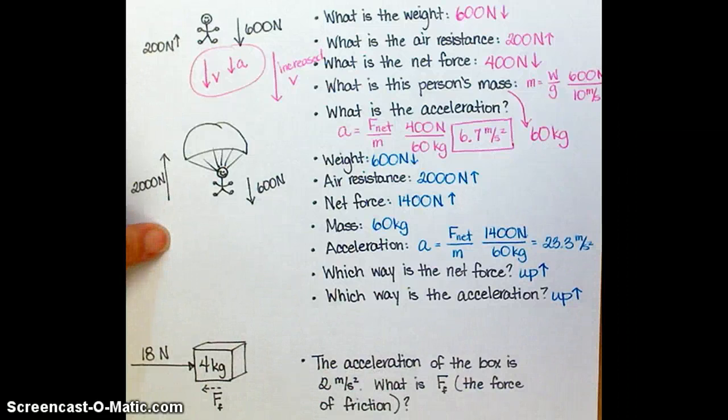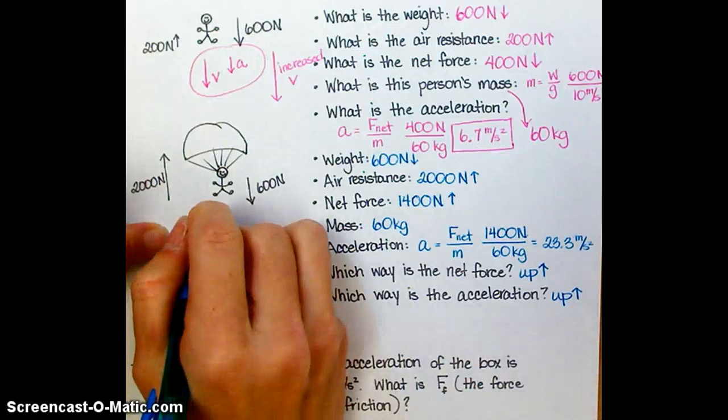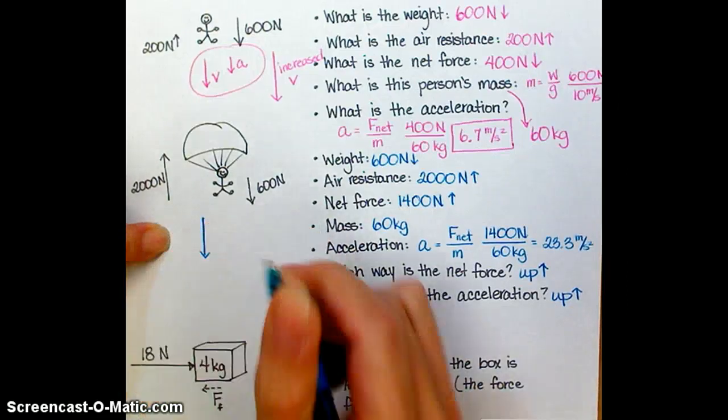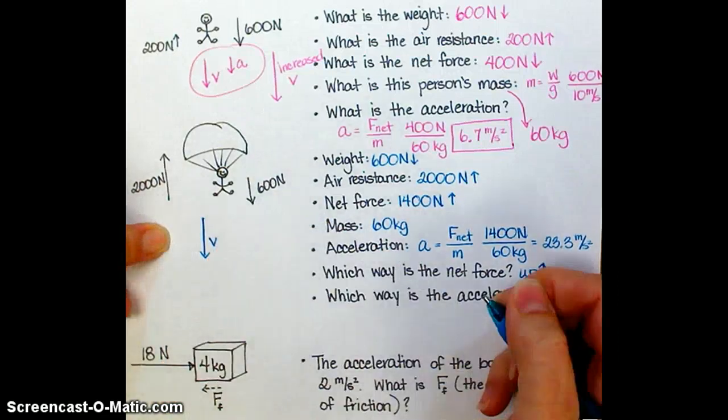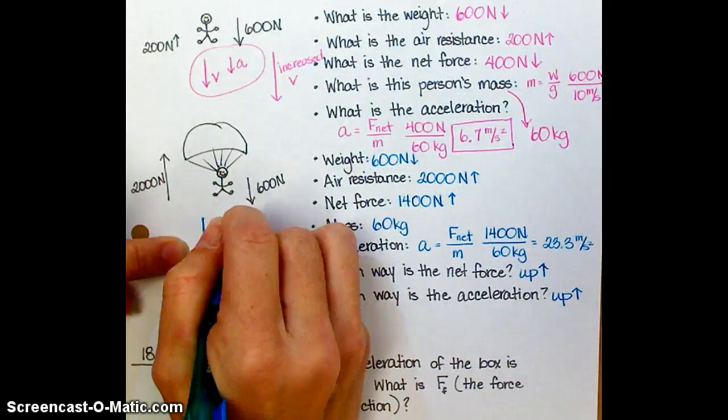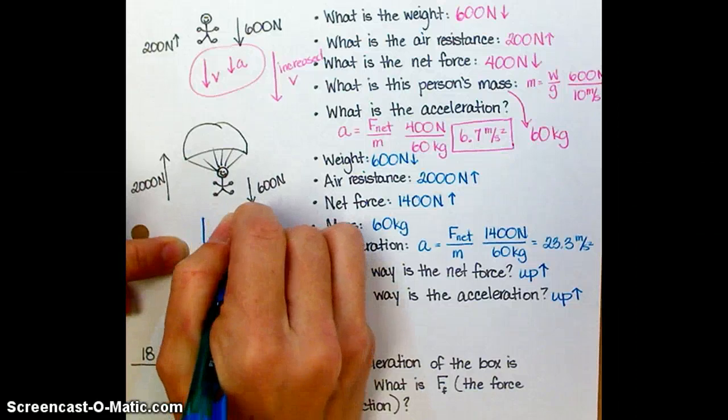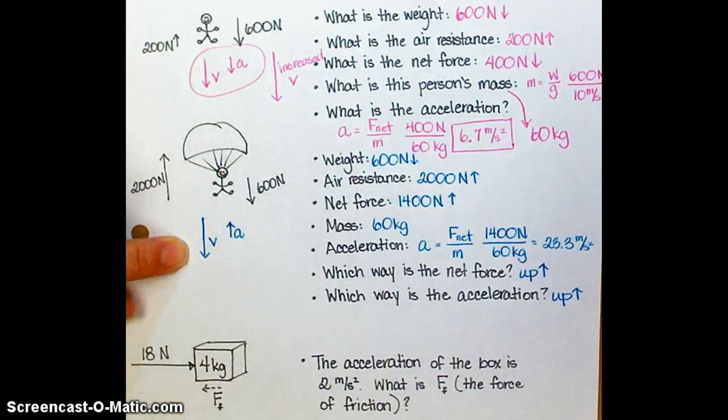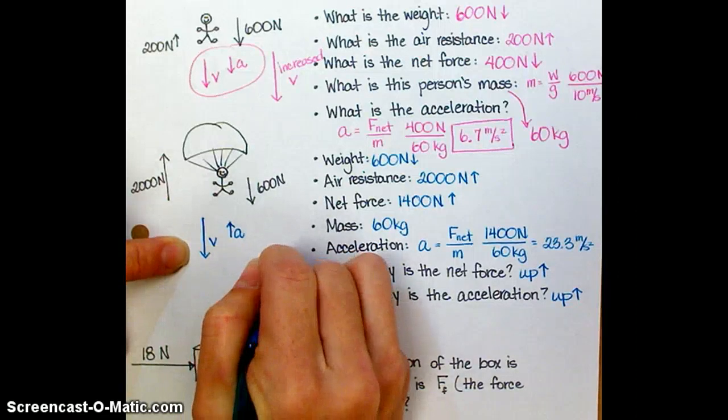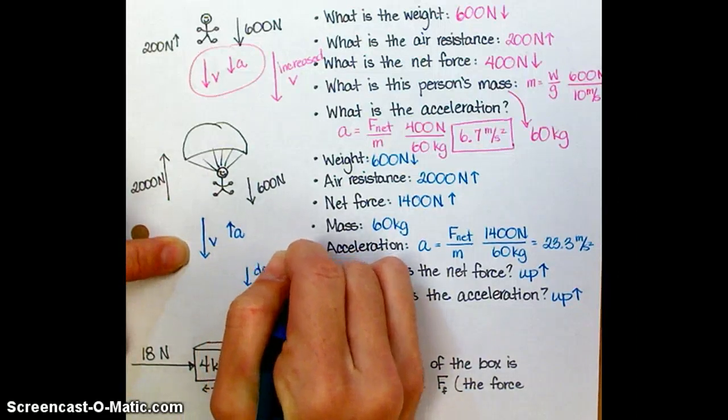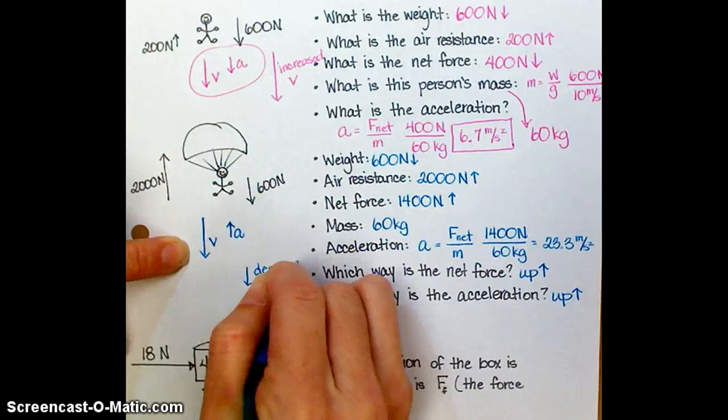Here, once he pulls his parachute, the situation is very different. This person still has velocity oriented down, meaning he's still falling. But this time, the acceleration acts in an upwardly direction.